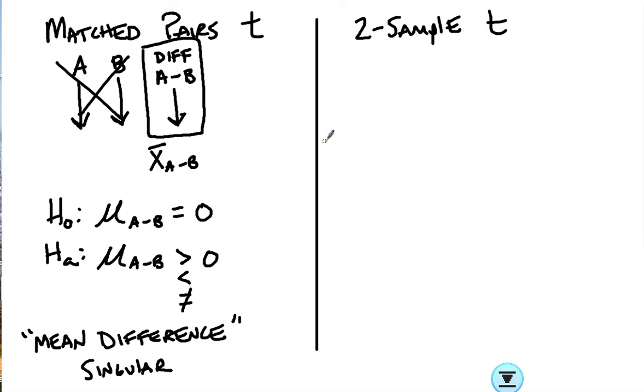When it's two-sample, we're going to have two different means, two completely different independent groups. So that's why you'll have an x̄₁ and you'll have an x̄₂.